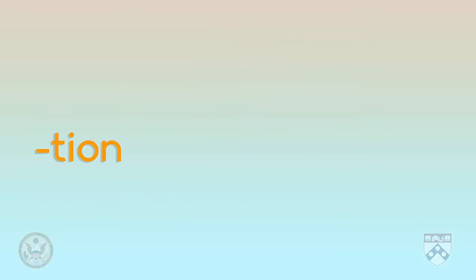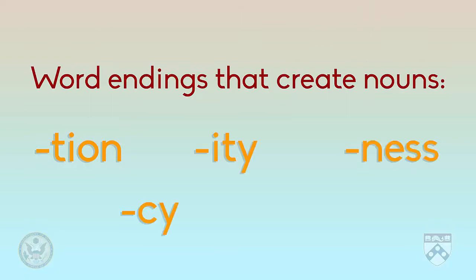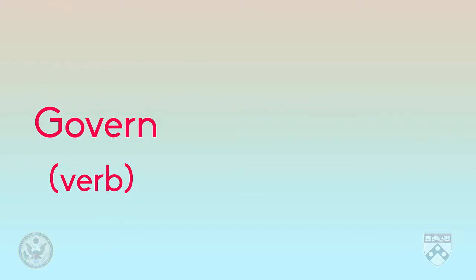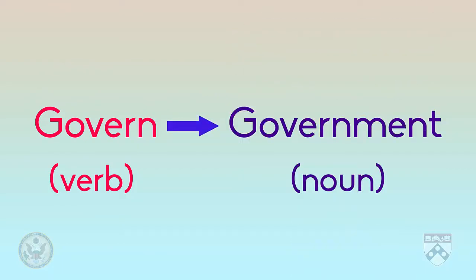In thinking about word families, we often start with the root and then look for the part of speech depending on the word ending — the letters at the end of the word. For example, T-I-O-N in verification shows that this word is a noun. Other endings include I-T-Y, N-E-S-S, C-Y, and M-E-N-T. Govern is a verb meaning to manage or lead. When M-E-N-T is added to the word, it means the system or organization that manages or leads — a government.